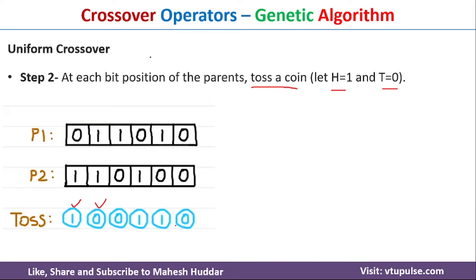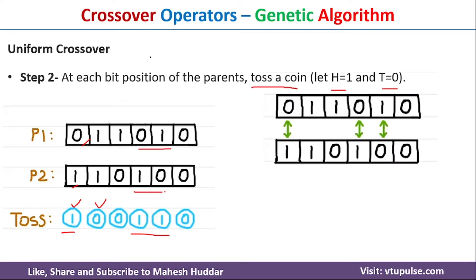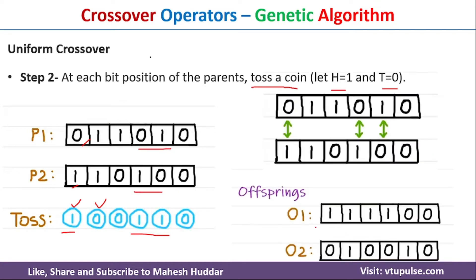Once we have the crossover positions, we swap the bits wherever the position is marked as 1. So the first gene (marked 1) swaps 0 and 1 between parents, and the fourth and fifth genes (marked 1) swap 0, 1 and 1, 0 respectively. After swapping, we get new offspring O1 and O2.